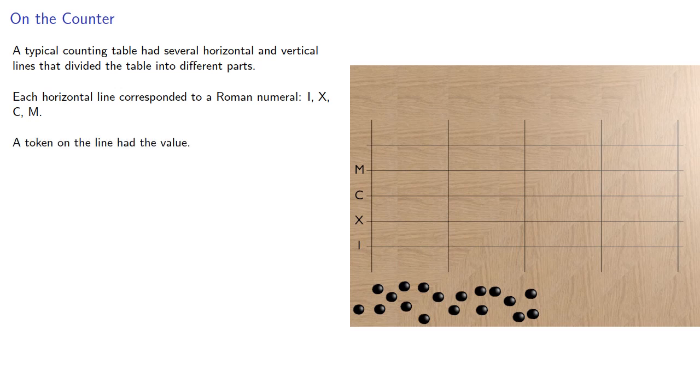A token placed on the line had the value. A token placed between the lines had the value of the intermediate symbol. That's five, or fifty, or five hundred.